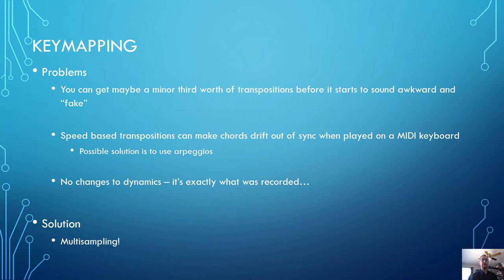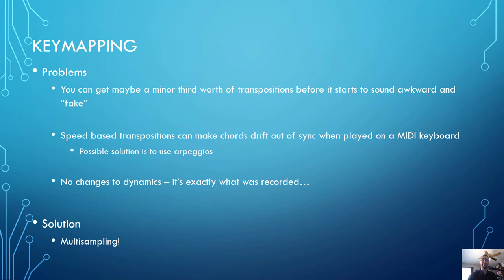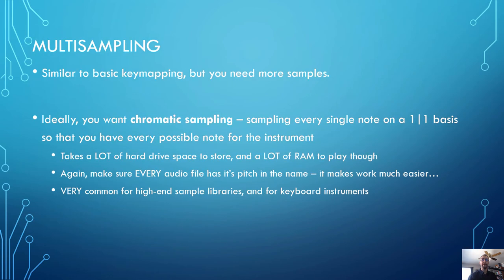This illustrates a key problem with key mapping: you can get maybe a minor third of transposition before the sound speeds up or slows down to the point it starts sounding fake. Additionally, speed-based transpositions make chords sound a little weird because the notes drift out of sync. There's also no change to dynamics — you're just hearing the sample played back at whatever volume it was recorded. The solution to all of this is what's called multi-sampling.